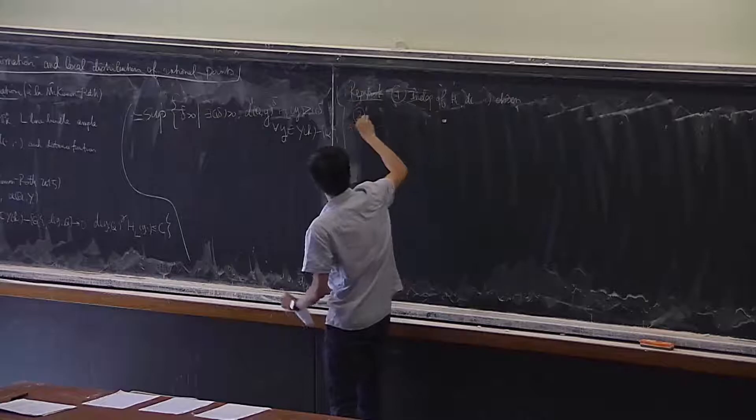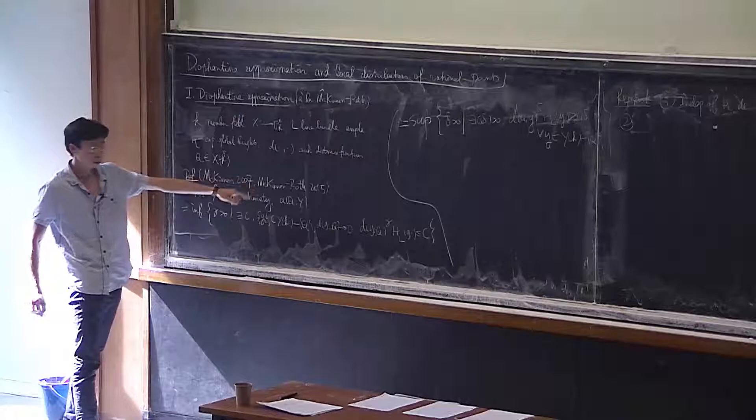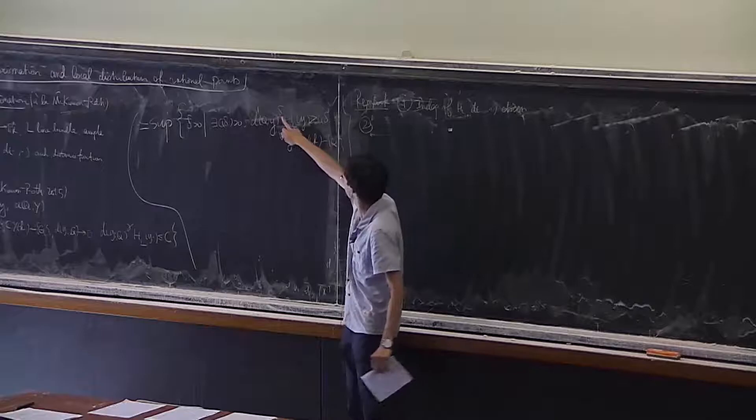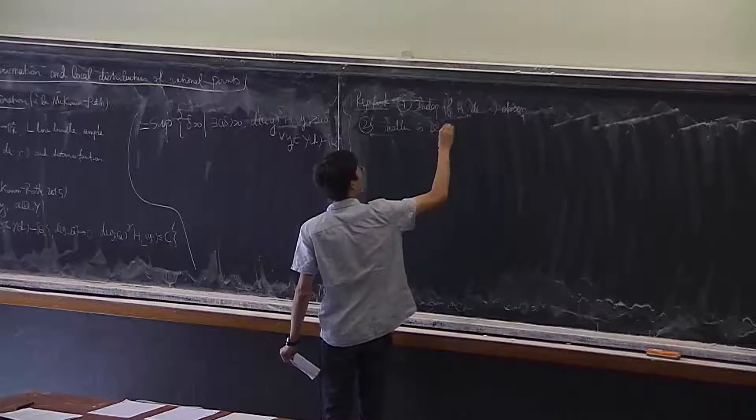Second remark: if you want better approximation, this means you want α to be smaller. If you raise the power too much, it means the approximation is bad. So smaller α means better approximation.